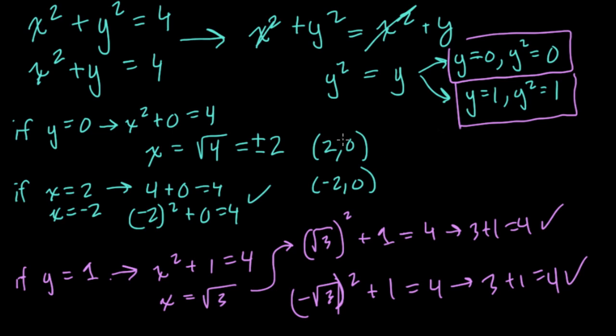So just to recap, we have these two points of intersection here. That's 2, 0 and negative 2, 0. And over here,